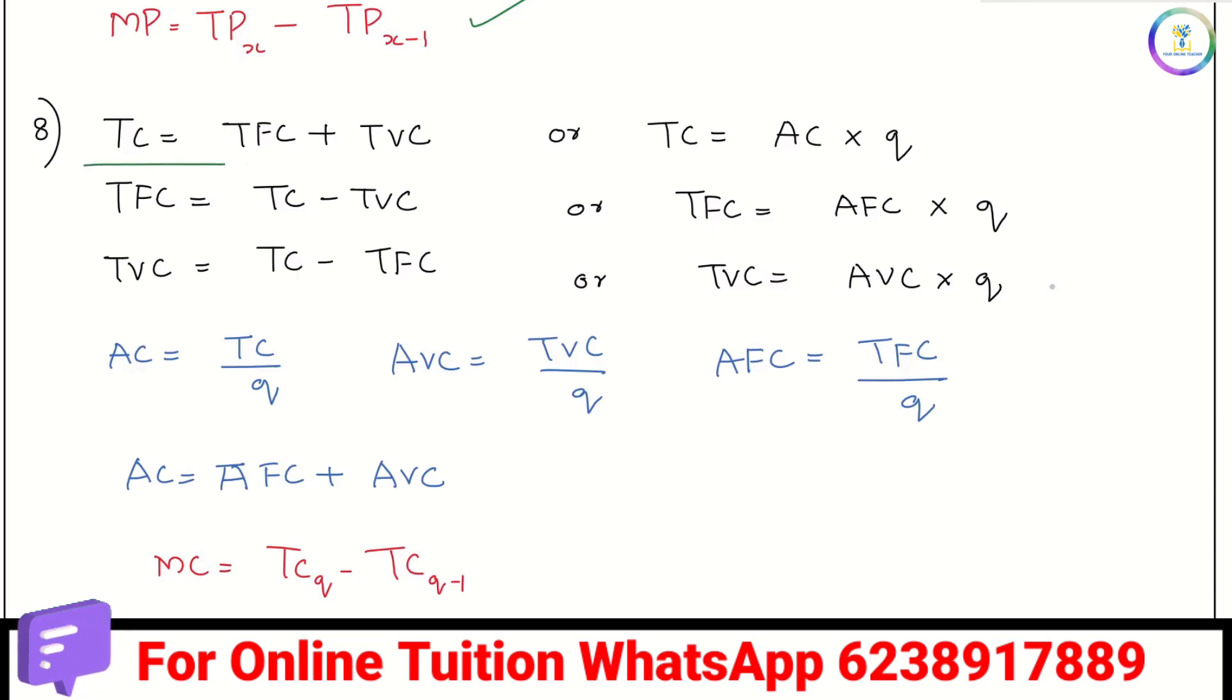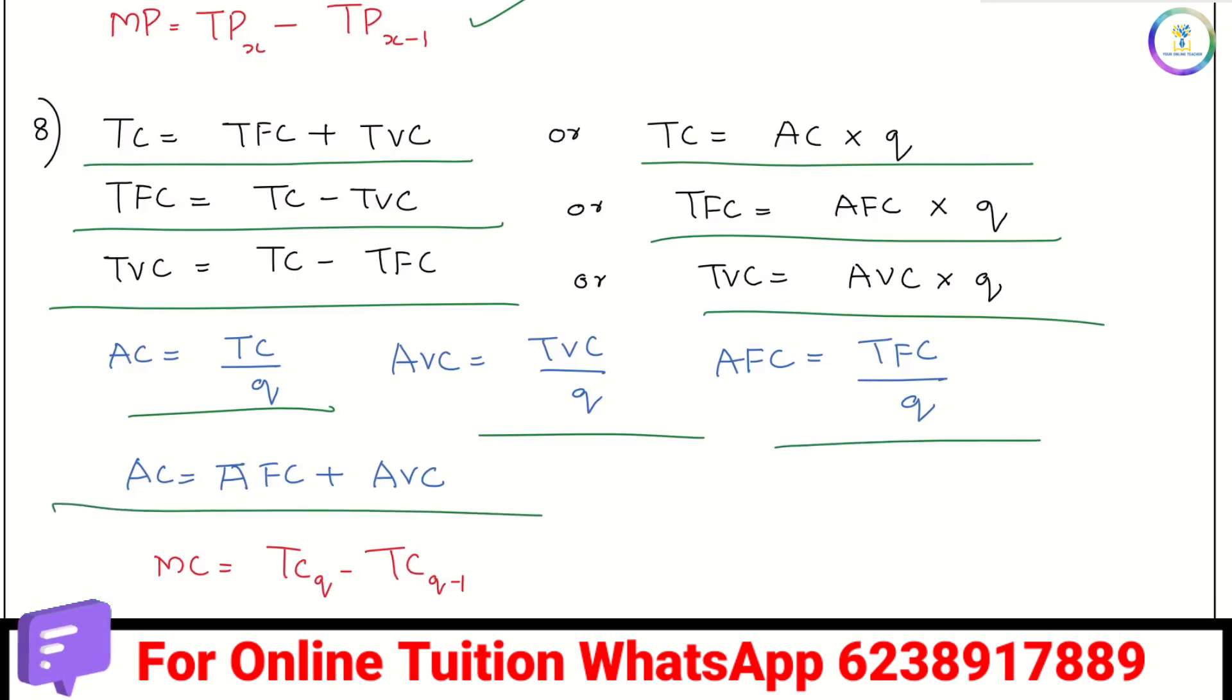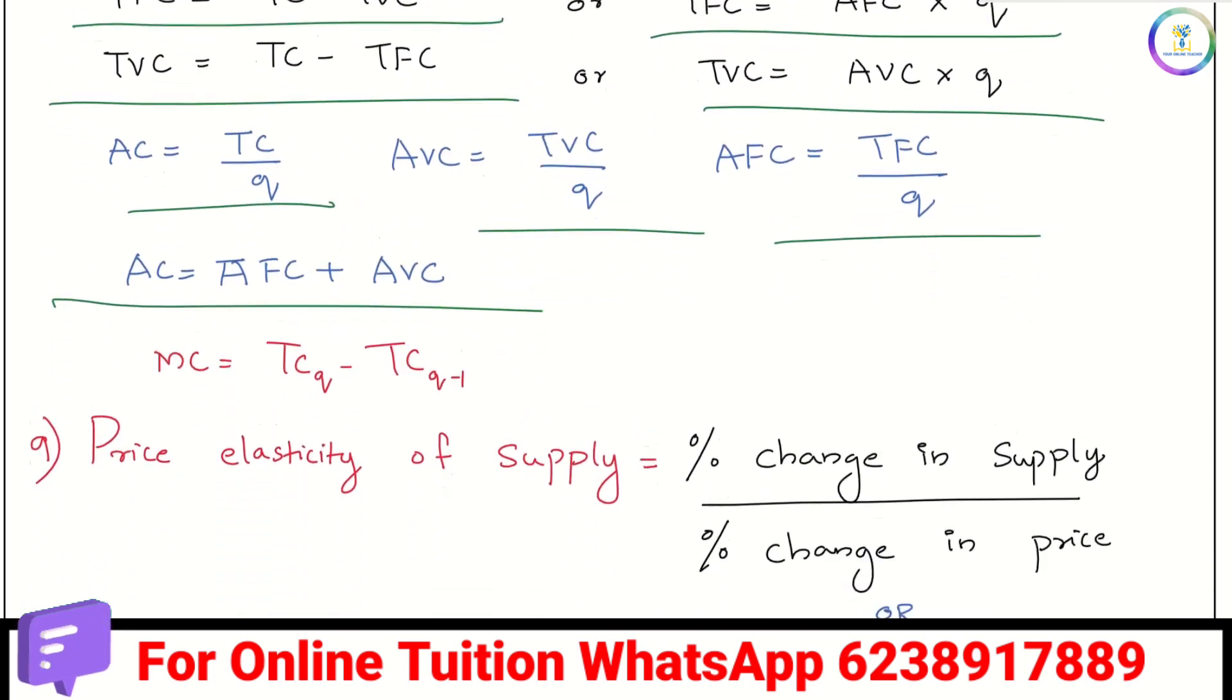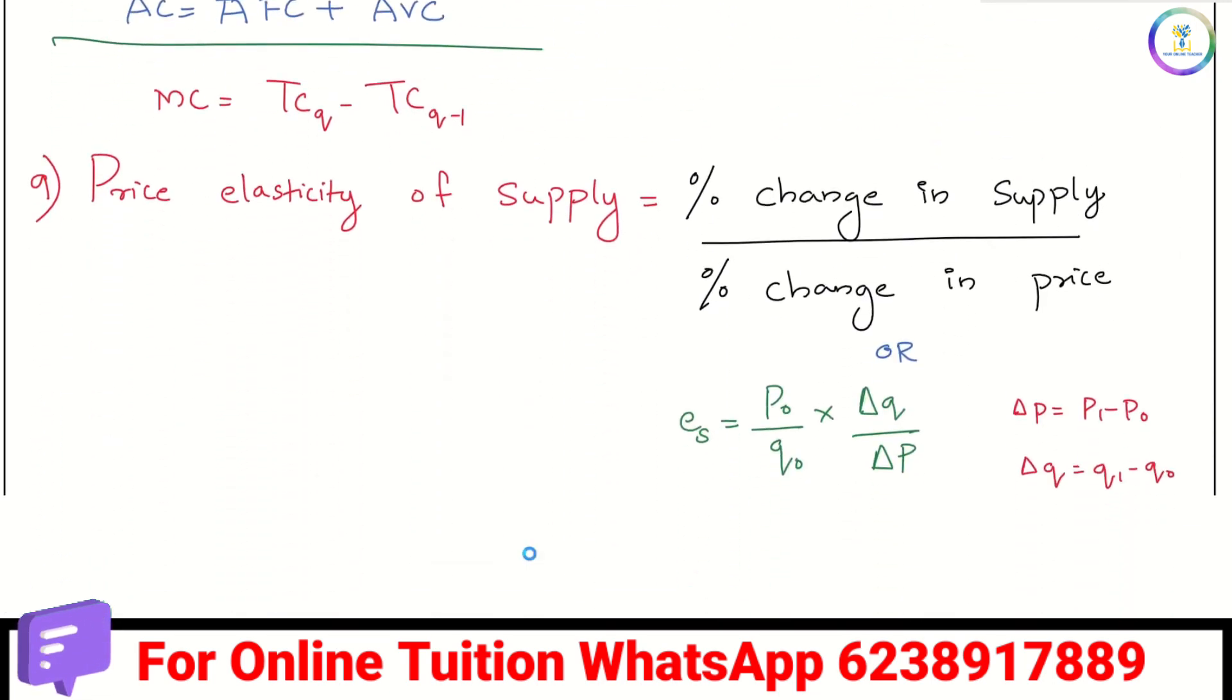TC is TFC plus TVC, or TC equals AC times q. TFC is TC minus TVC, or TFC equals AFC times q. TVC is TC minus TFC, or TVC equals AVC times q. MC is TC_q minus TC_{q-1}.